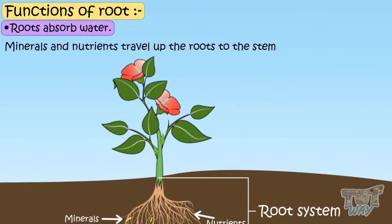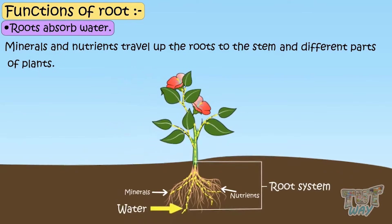Minerals and nutrients travel up the roots to the stem and different parts of plants to provide nutrition to all parts of the plant.